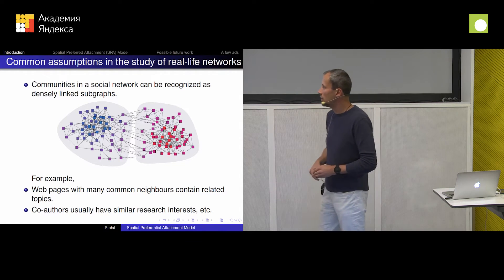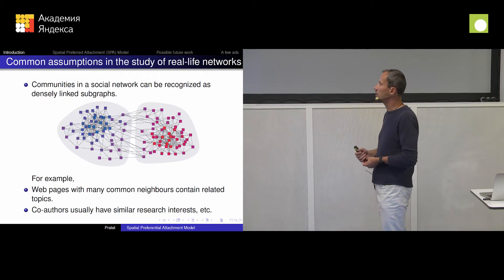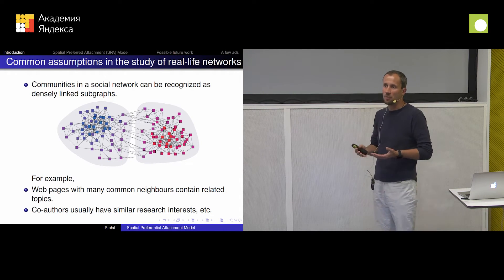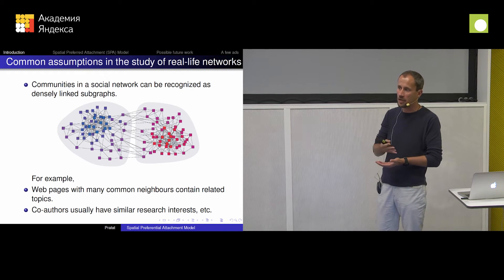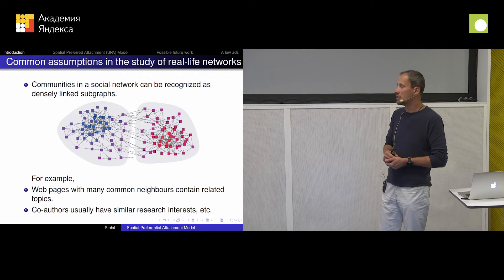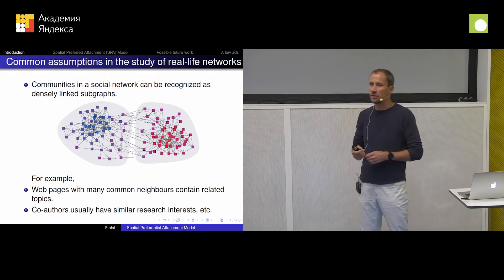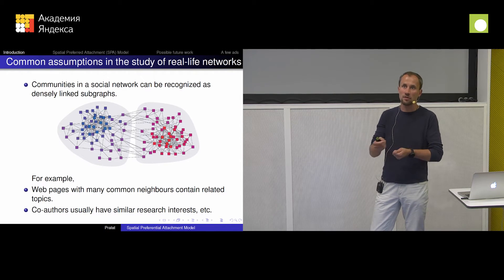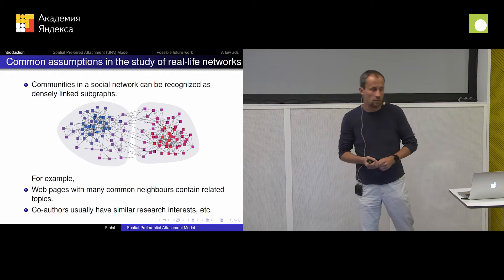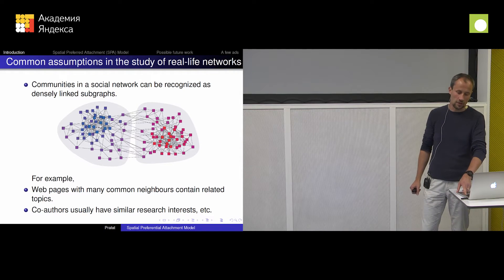I don't want to have communities embedded into the model — I want them to naturally show up. And that's what's needed because in real networks we have these communities. If we look at the web graph, you have web pages which contain related topics. They have dense hyperlinks between them and sparse globally. The same applies to many other networks like co-authors — if they share the same research interest, then this part of the graph is quite dense, but rarely do they collaborate with people outside the field.